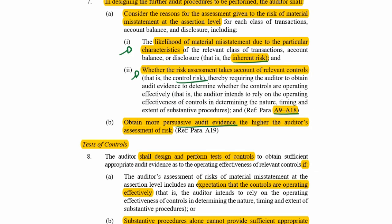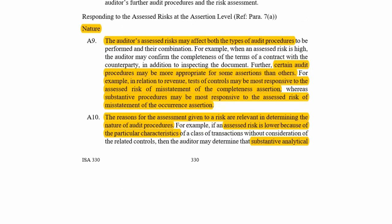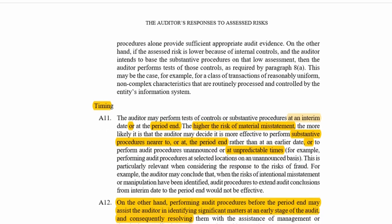Paragraphs A9 to A18 cover the nature of procedures. The auditor's assessed risk may affect both types of audit procedures to be performed. For example, in relation to revenue, tests of controls may be more responsive to the assessed risk of completeness, whereas substantive procedures may be more responsive to the risk for the occurrence assertion. The reason for your assessment matters: if the assessed risk is lower, you may determine to do analytical procedures as opposed to tests of detail.